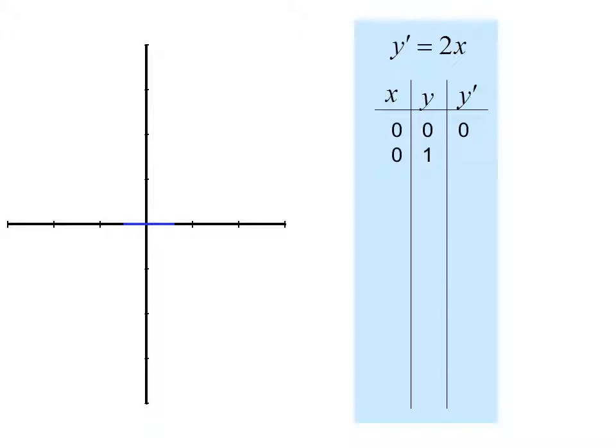If we choose x equals 0 and y equals 1, y prime is still 0, so we draw another line segment with a slope of 0. If x is 1 and y is 2, once again y prime is 0. You can see where this is going because there is no y in the derivative equation. It doesn't matter what y is. If x is 0, we're getting a slope of 0. So we can keep filling these in as horizontal segments.